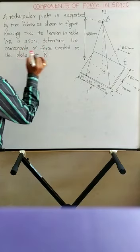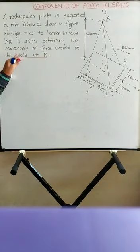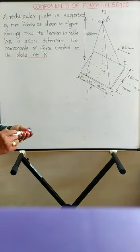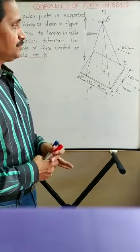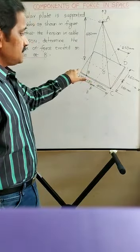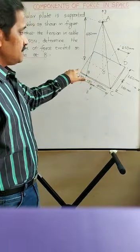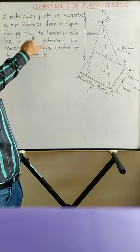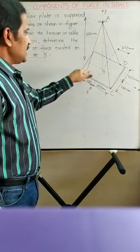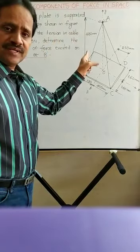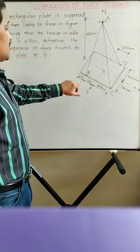Please note this point: components of force exerted on the plate at B. This is the rectangular plate having dimensions 900 mm length and 720 mm width. This plate is supported by three cables AB, AC, and AD, and all three cables are anchored at point A. The tension in cable AB is 450 N, and you have to find out the components of the tension exerted at B.